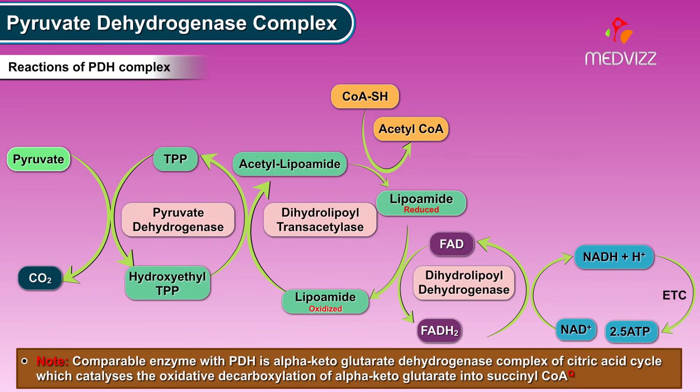A comparable enzyme to PDH is the alpha-ketoglutarate dehydrogenase complex of the citric acid cycle, which catalyzes the oxidative decarboxylation of alpha-ketoglutarate into succinyl coenzyme A.